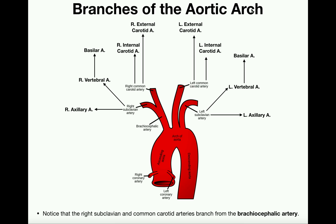Coming off the ascending aorta, close to the heart, are the right and left coronary arteries. We won't go into detail about those in this video — that'll be a separate video — but the coronary arteries supply the heart muscle itself. The heart doesn't just pump blood to the rest of the body; it also requires blood for its own muscle. So the coronary arteries keep a little blood for the heart itself.